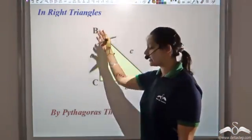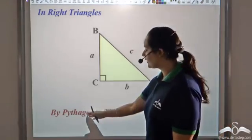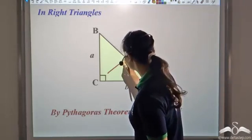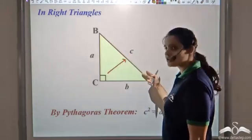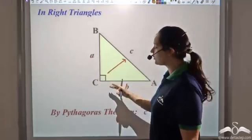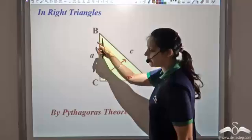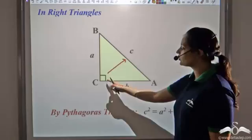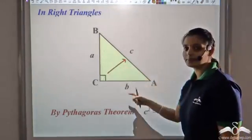We have seen that in right triangles we can apply the Pythagorean theorem. The Pythagorean theorem says that in a right angle triangle, the side opposite to the right angle is the hypotenuse. By Pythagoras, hypotenuse squared, which is c², equals the sum of squares of the other two perpendicular sides, A and B. So c² = A² + B².